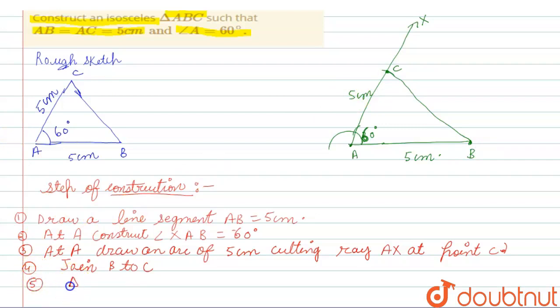Fifth point: triangle ABC is the required triangle.